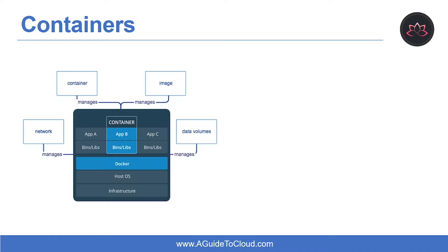To save data, the container can mount persistent storage such as Azure Disk or File Share, including Azure Files. You need Docker in order to work with Windows containers. Docker consists of Docker Engine and Docker Client.